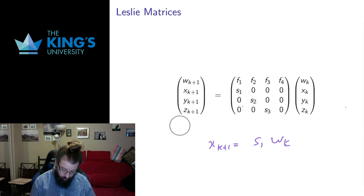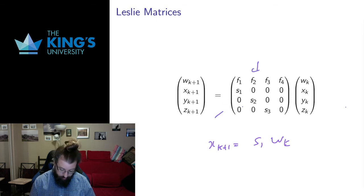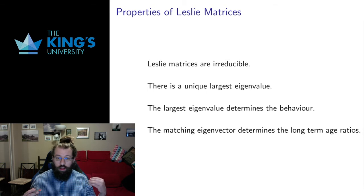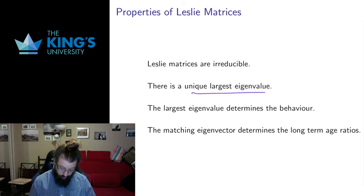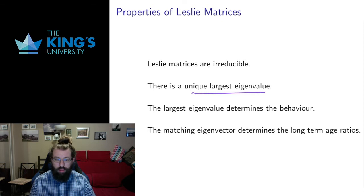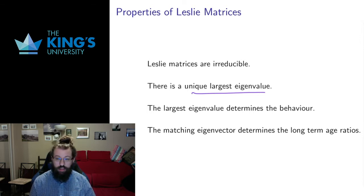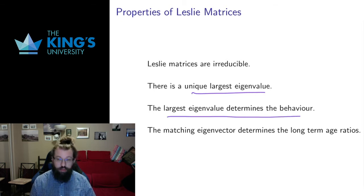These are irreducible matrices, so the strong form of Perron-Frobenius applies, and there is a unique largest eigenvalue that determines the behavior. If that largest eigenvalue is less than one, the population will decay — it's not viable. If it's larger than one, the population will grow and is viable. If it equals exactly one, the population stays stable. This is a classic example of applied linear algebra: we calculate eigenvalues and interpret them.